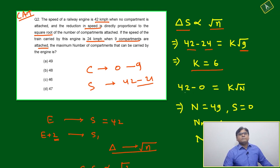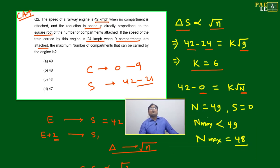Now, 42 to 0 - earlier speed was 42, it is dropping to 0. If N compartments are attached, then here, solving for k which is 6, if you put 6 here, then n will equal 49.